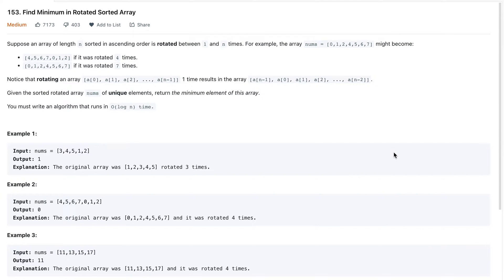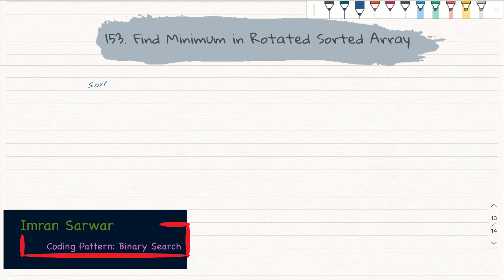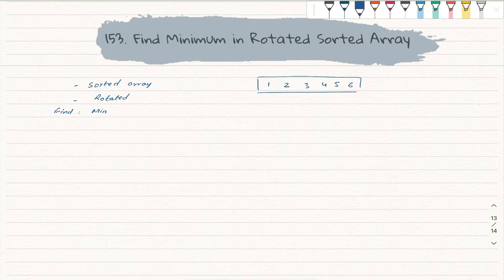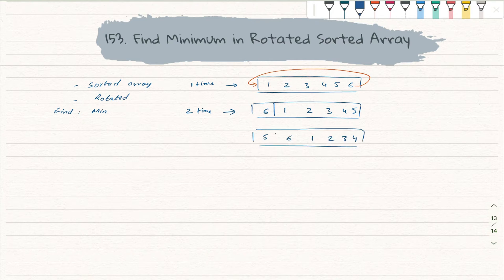Today we'll solve another binary search question: Find Minimum in Rotated Sorted Array. The question says we are provided a sorted array that will be rotated at some pivot point, and we have to find the minimum. For example, if we have an array and push it one time, six will move to the start. If you push again two times, it will start looking like a rotated sorted array.